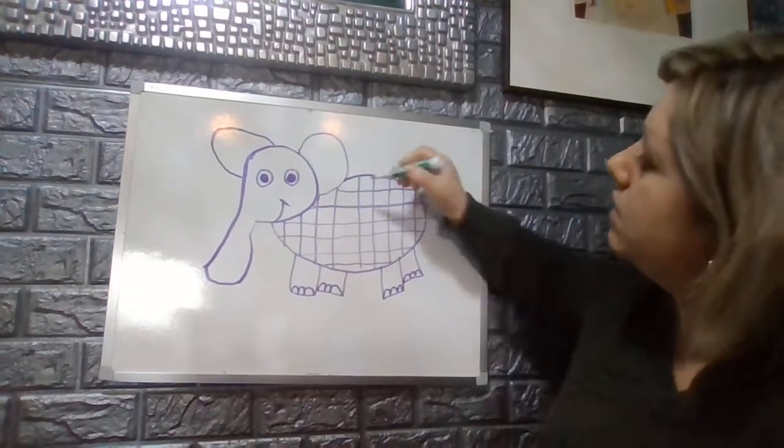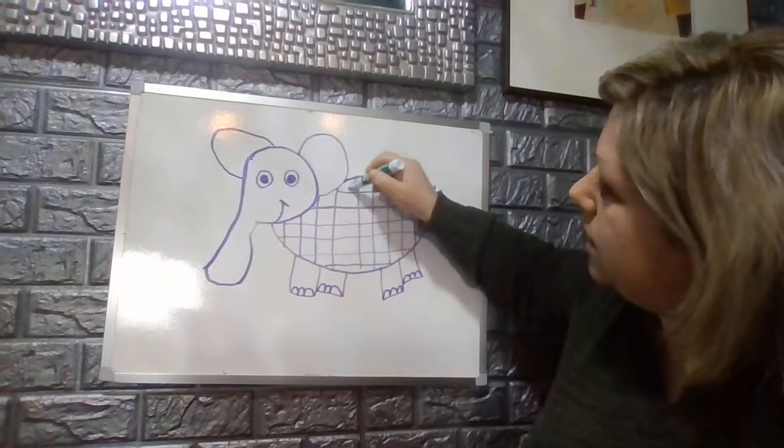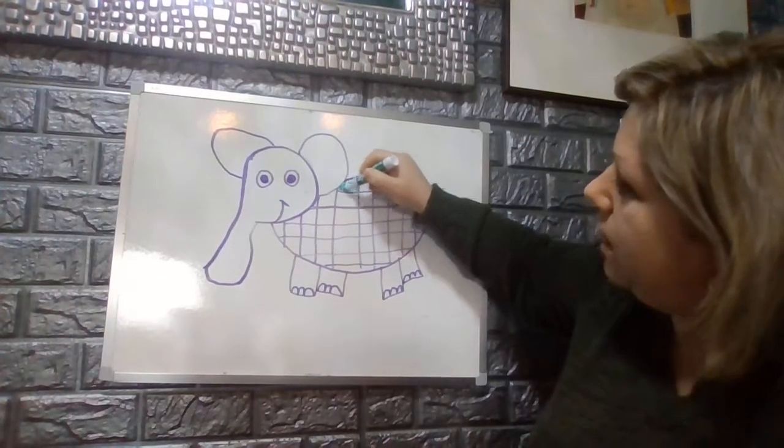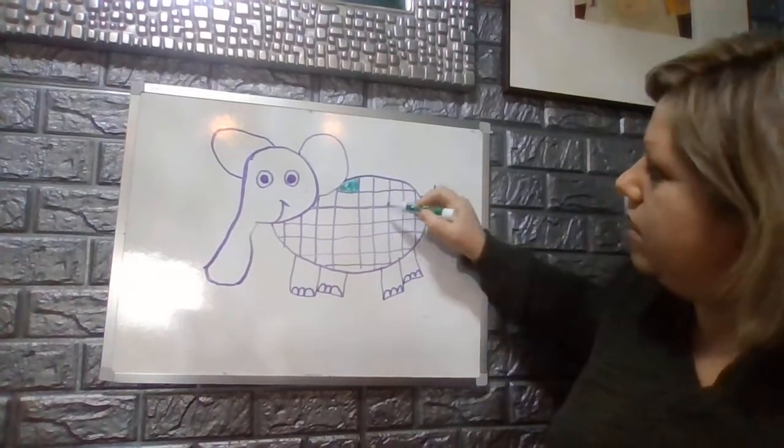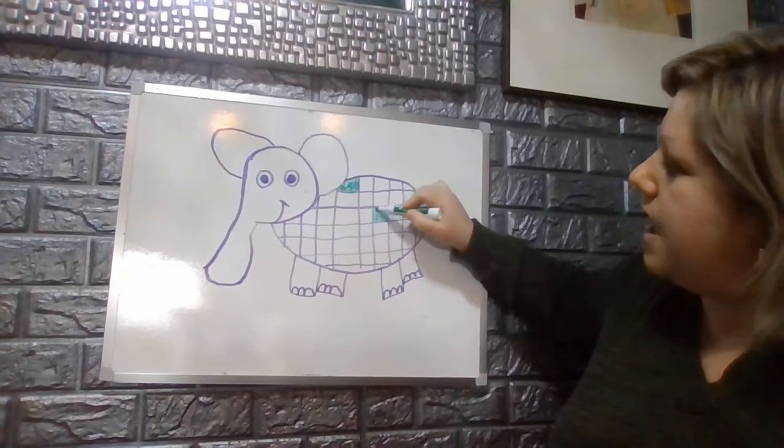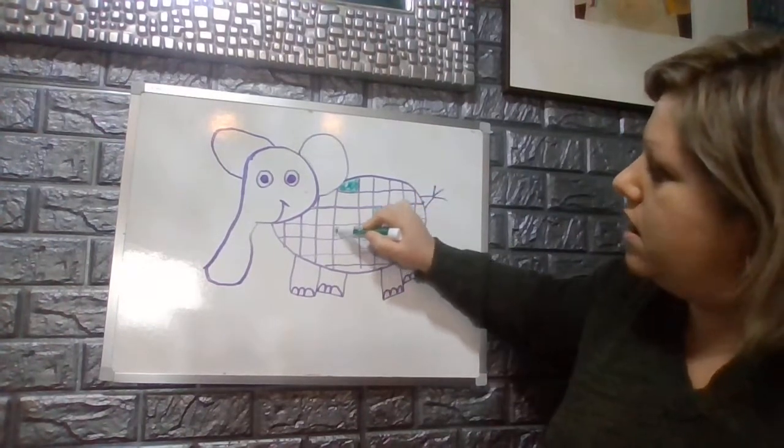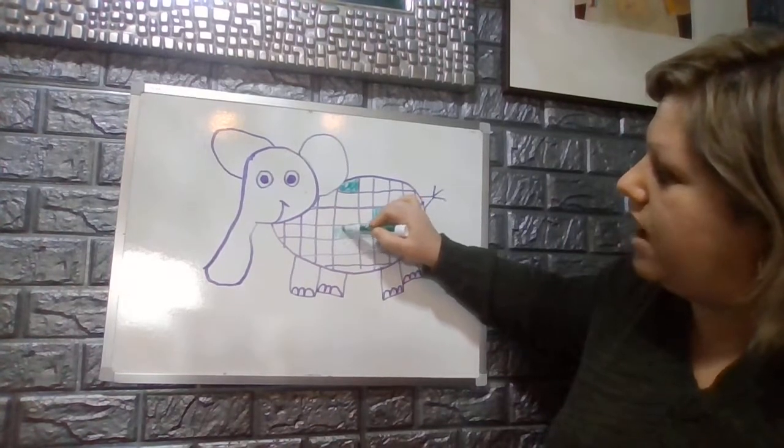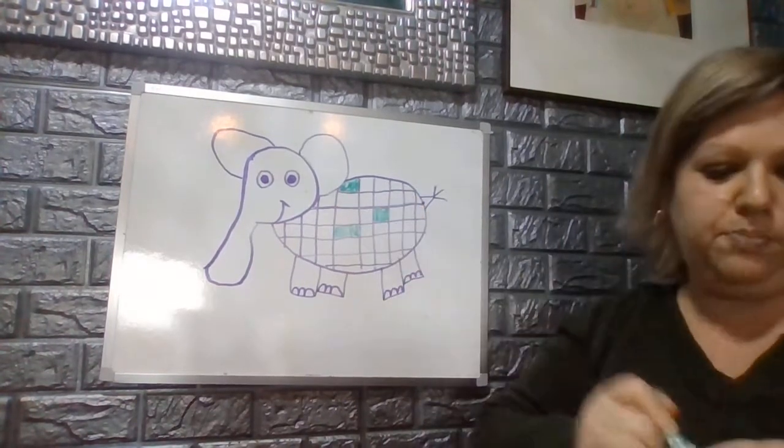So I'm going to start by coloring like this square in green. So I'm going to use all the green first. I'm going to pick different squares to make green, and I'm going to stay in the lines until my patchwork Elmer the elephant is complete.